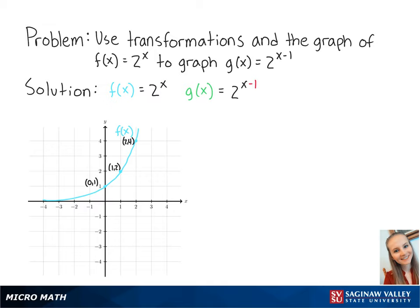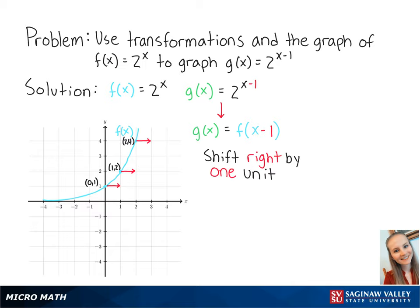For this problem, we want to use transformations in the graph of f of x equals 2 to the x to graph g of x equals 2 to the x minus 1. g of x is equal to f of x minus 1, so the graph of g of x is going to be the graph of f of x but shifted to the right by one unit.